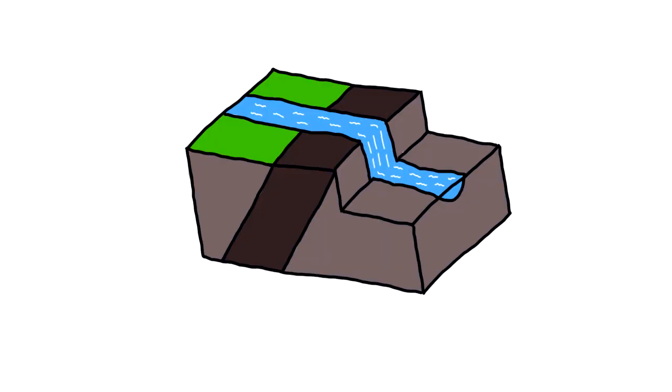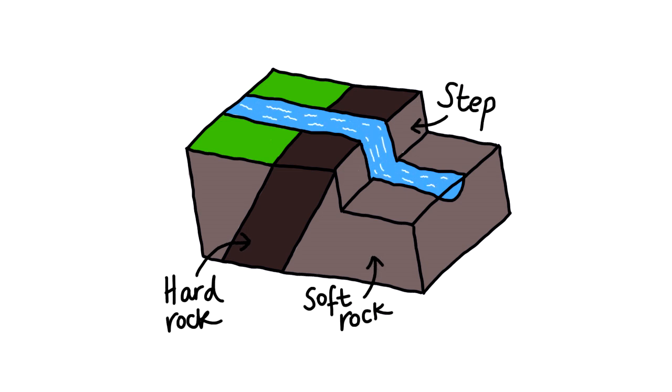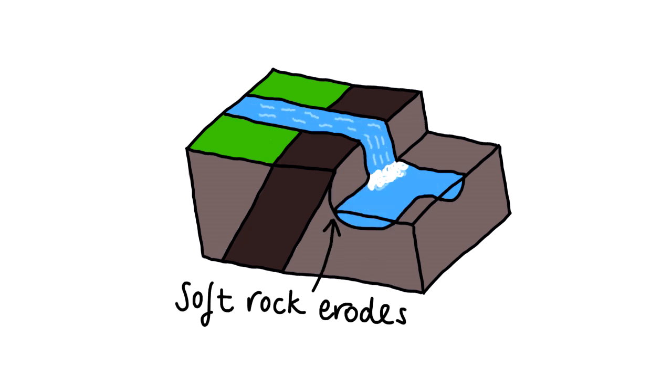Waterfalls occur when there is a sudden change in the gradient of a river as it flows downstream. They form when a band of hard rock meets softer rock. The softer rock erodes much faster than the harder rock, causing a step in the riverbed. The step causes the water to speed up due to a lack of friction, giving it greater erosive power.